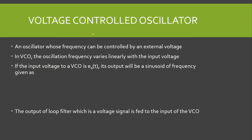What is a voltage controlled oscillator? It is an oscillator whose frequency can be controlled by an external voltage. In the VCO, the oscillation frequency varies linearly with the input voltage. Suppose the input voltage to the VCO is E₀; its output will be a sinusoid of frequency: ω(t) = ωc + c·E₀, where c is a constant and ωc is the free running frequency of the VCO. This is the frequency at the start phase when E₀ = 0.